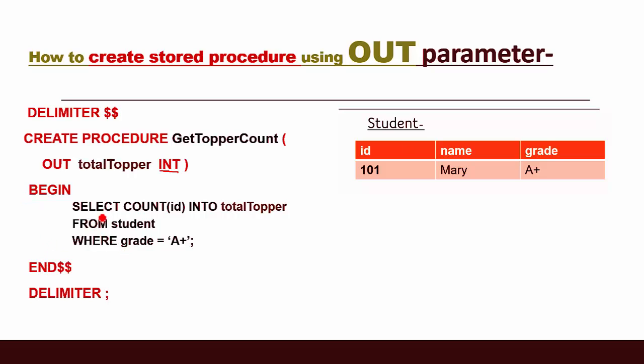Between BEGIN and END we write our SQL code: SELECT COUNT(id) INTO total_topper FROM student WHERE grade = 'A+'.